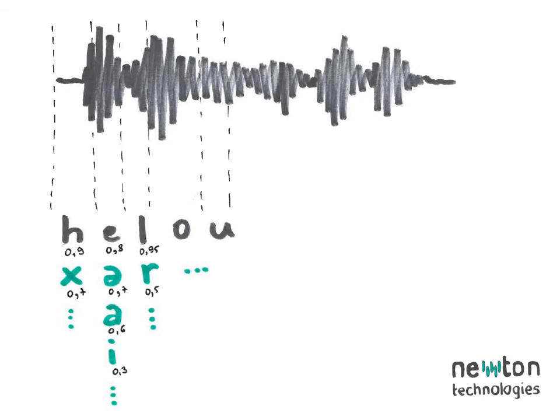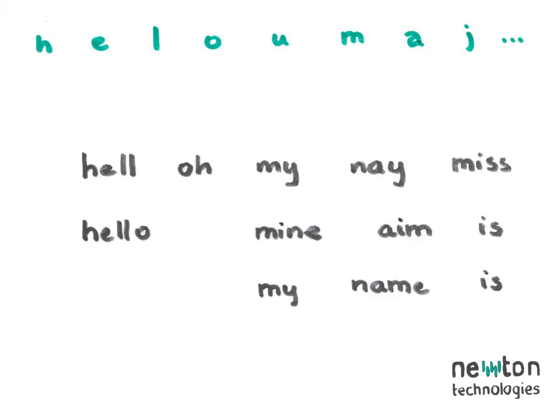So we have our most likely string of phones, and the next step is to convert it into words. But this part can be tricky, because the ASR does not know when a word starts or ends. Contrary to popular belief, there are no pauses between words in fluent speech. This particular string of phones can constitute several different phrases — I could have said something like, "Hello, my name is."